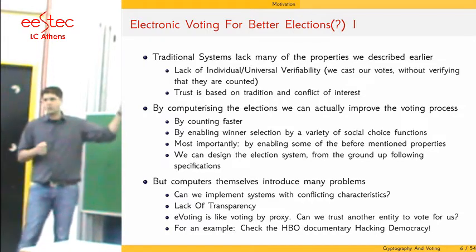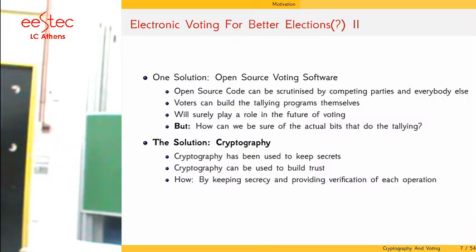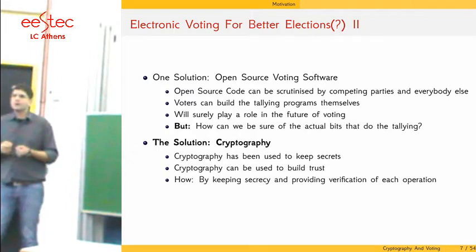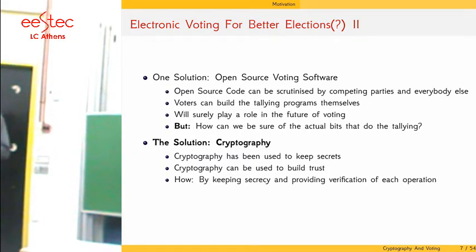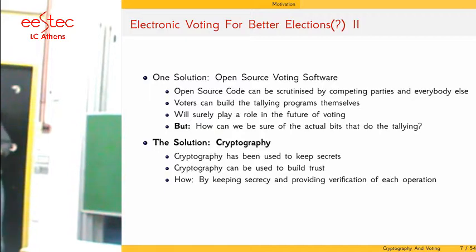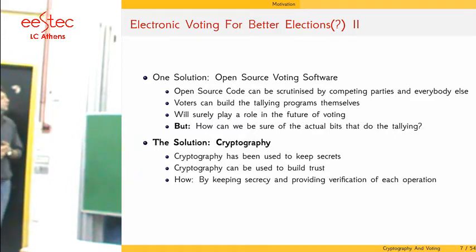Lack of transparency can affect an election — there is an interesting documentary called 'Hacking Democracy' about these problems. One solution is to have all voting software open source, which can be scrutinized by everybody — voters themselves, all parties, everybody — and accountability programs can be built by the voters themselves. But even if the code is open, we might not be exactly sure of the actual bits that do the accounting, so something stronger is needed.